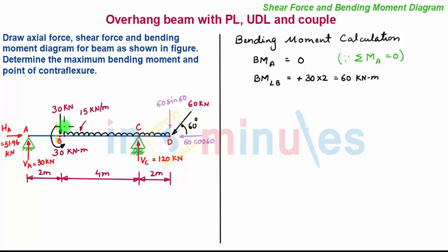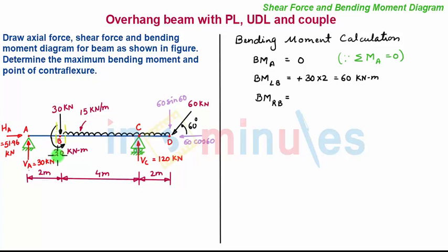Now taking a section towards the right of B and very near to it, the bending moment towards the right of B — considering the left-hand side — has the same magnitude from the reaction force since the distance moved is very small. However, when we move the section to the right of B, we add the anticlockwise moment of 30 kNm. So we have 60 kNm minus 30 kNm, giving 30 kNm.